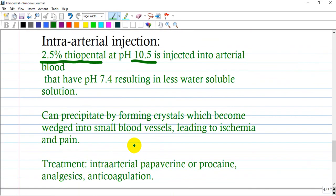An important thing about accidental intra-arterial injection of Thiopental: as it has pH 10.5, when injected into arterial blood with pH 7.4, it results in a less water-soluble solution. It can form crystals and precipitate, becoming wedged in small blood vessels to produce ischemia or even occlusion of peripheral vessels like capillaries.